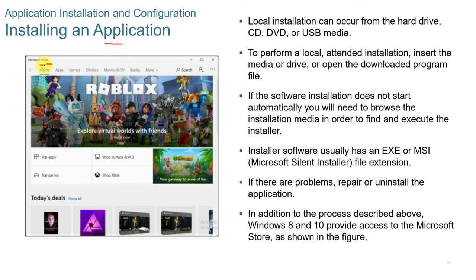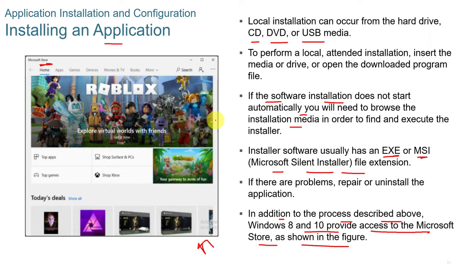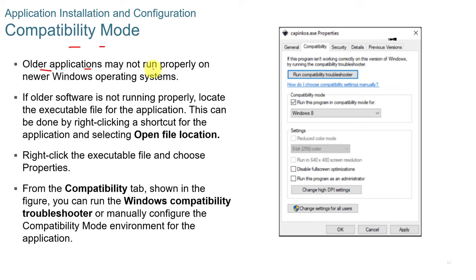Windows 8 and 10 provide access to the Microsoft Store, which installs and updates apps. For compatibility mode, older applications that don't run properly on newer Windows can be handled by right-clicking the executable, selecting the Compatibility tab, and running the Windows Compatibility Troubleshooter, or manually specifying a prior Windows version such as Windows 7 or 8. Windows will then run the program virtually under that OS version.